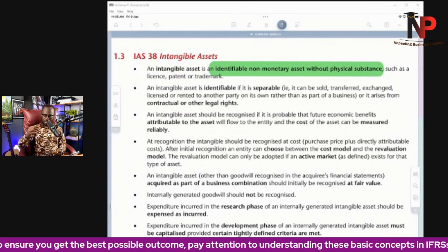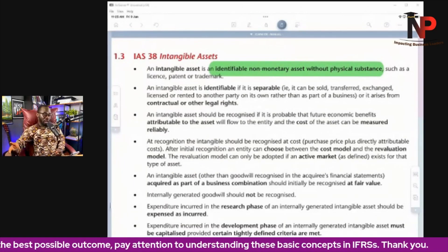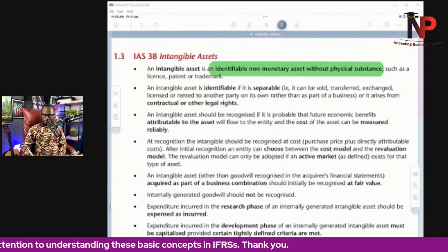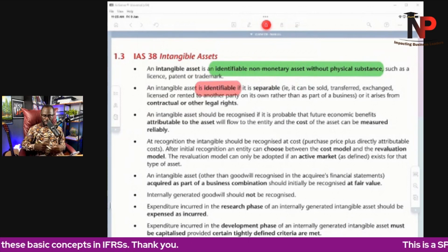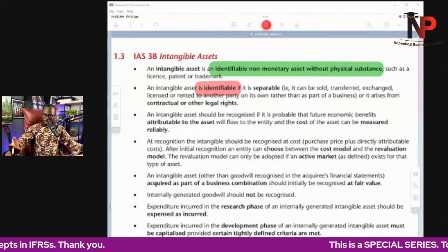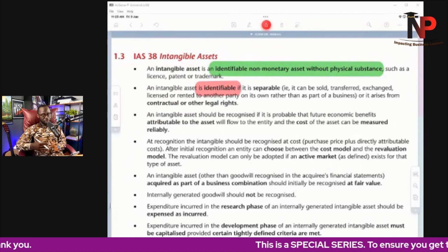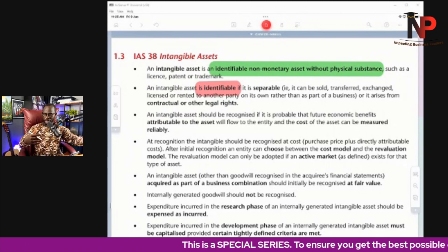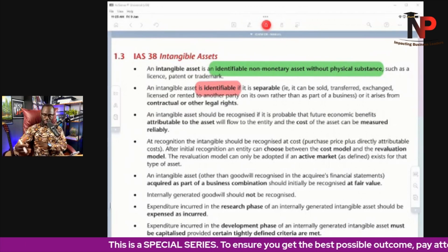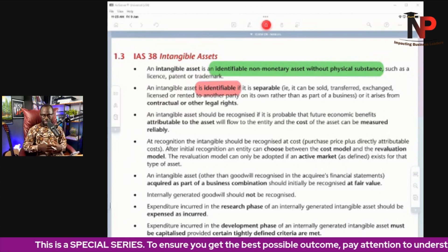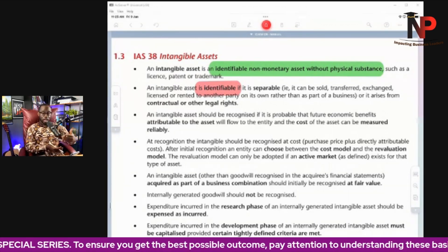But when we say something is identifiable, what do we mean? Something can be defined as identifiable if it can be sold separately, if it can be transferred, exchanged, licensed, or rented out. Then we say that it is identifiable.